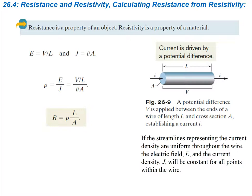To calculate resistance from resistivity: the electric field equals voltage divided by the length of the conductor (E = V/L), and current density is current divided by area (J = I/A). Since resistivity rho = E/J, we can plug in and get that resistance R = rho * L / A, where L is the length and A is the cross-sectional area.